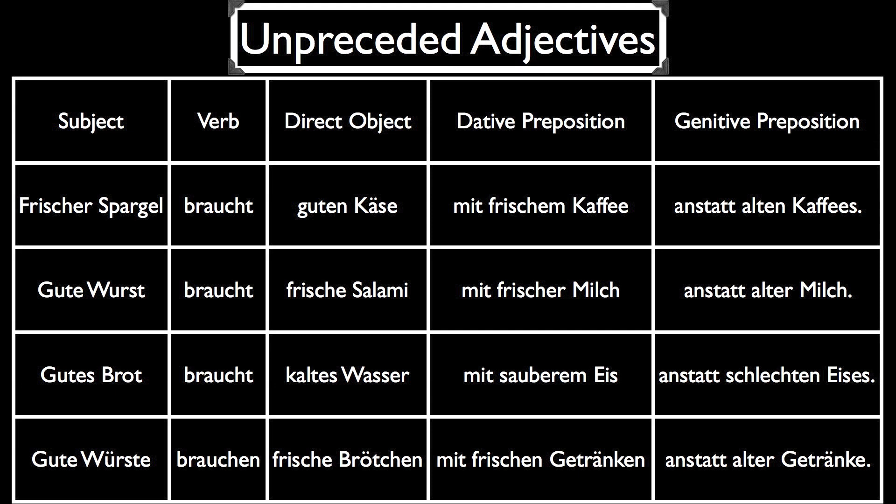Our second example uses only feminine nouns: Gute Wurst braucht frischer Salami mit frischer Milch anstatt alter Milch — Good sausage needs fresh salami with fresh milk instead of old milk. Again, if you replace the adjectives with diese, you get: Diese Wurst braucht dieser Salami mit dieser Milch anstatt dieser Milch — nothing would really change. Our third example uses only neuter nouns: Gutes Brot braucht kaltes Wasser mit sauberem Eis anstatt schlechten Eises — Good bread needs cold water with clean ice instead of bad ice. The only ending that would actually change compared to diese is the genitive form — schlechten instead of dieses. Our last example uses only plural nouns: Gute Würste brauchen frischer Brötchen mit frischen Getränken anstatt alter Getränke.